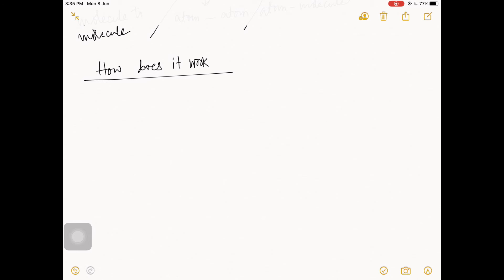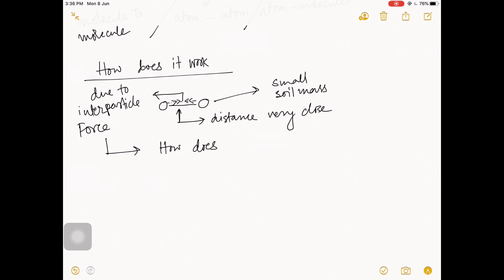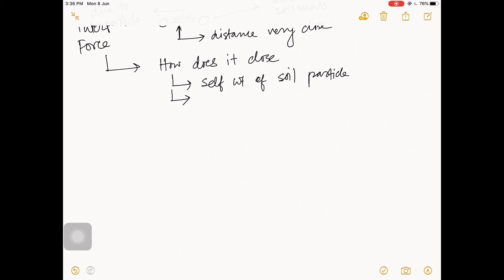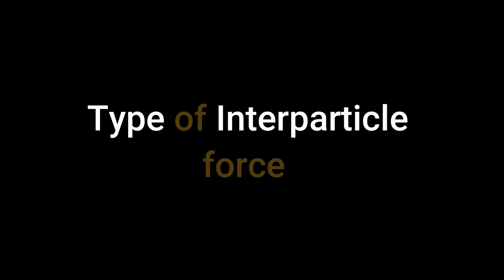Let's see how interparticle forces act in a soil mass. The soil mass consists of very small particles that are very close together. Due to interparticle forces, these particles gradually come closer. What causes this distance to decrease? The answers include the self-weight of soil, capillary force, seepage force, and other factors.